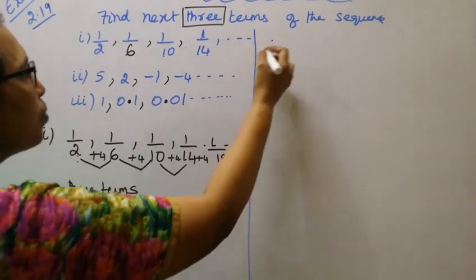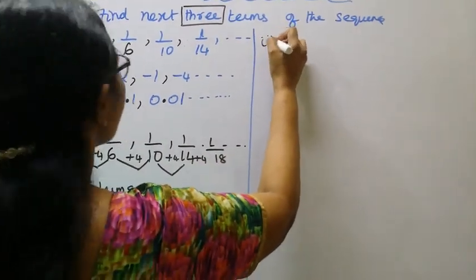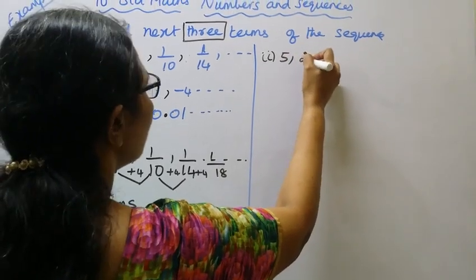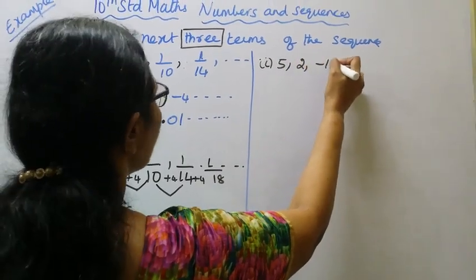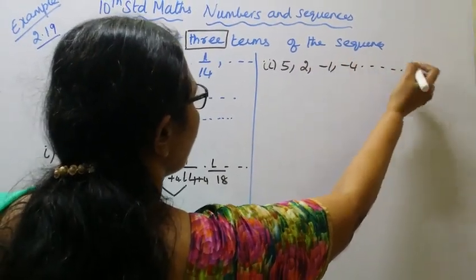Second subdivision: 5, 2, minus 1, minus 4, and so on.